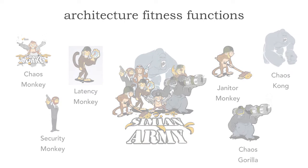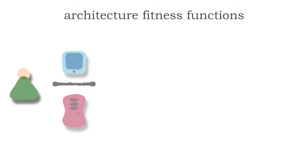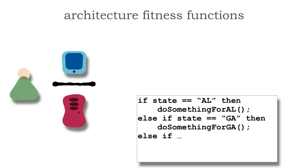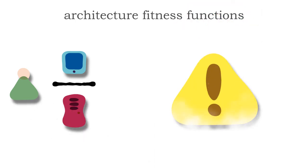Fitness functions don't need to be that global. For example, we can have a fitness function that says the cyclomatic complexity of any piece of code cannot be greater than 30 — meaning the number of if-then branches. A developer has some back-end code and some front-end code. The developer starts writing: if the state's Alabama then do something for Alabama; if it's Georgia, do something for Georgia. With 50 states in the U.S., once they try to deploy this in the back-end, it will fail the fitness function.